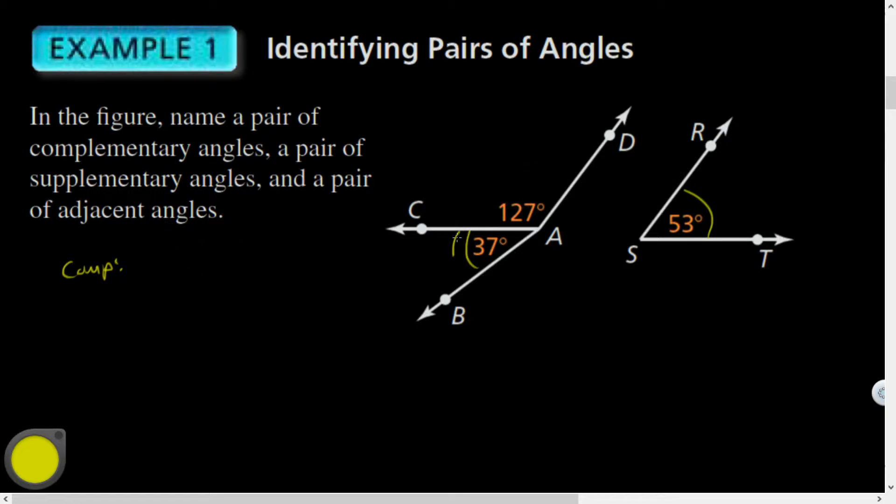Yeah, the 53 and 37. So if I want to name those, I would say angle—I could say, let's keep it simple, angle S. I don't need a three variable or three-point name for that. And angle BAC. So those ones are complementary. This one I do need the full name because there's multiple angles at that vertex, and I need to make sure it's a unique name.